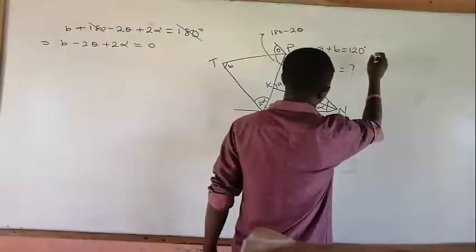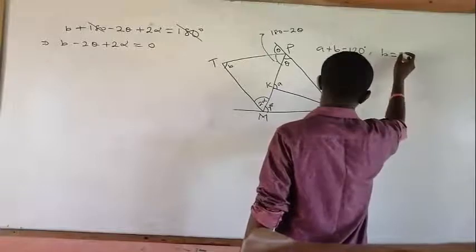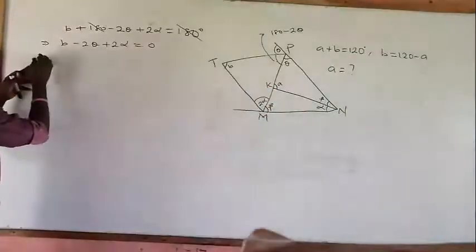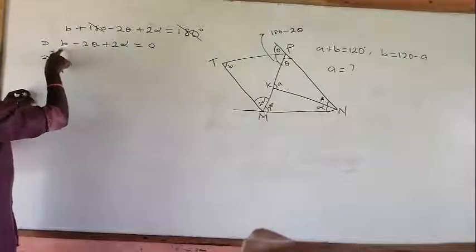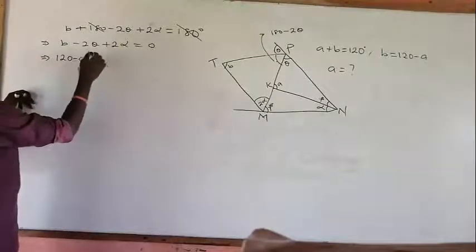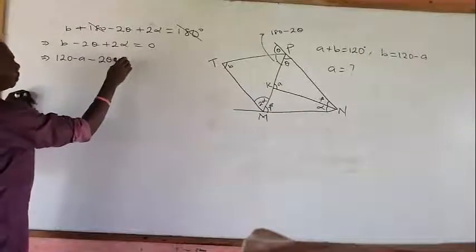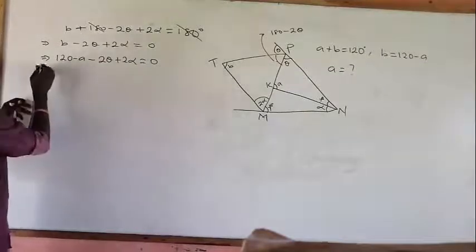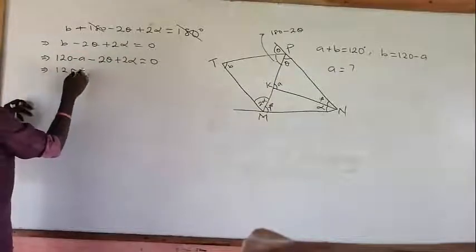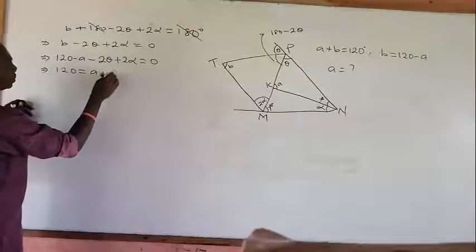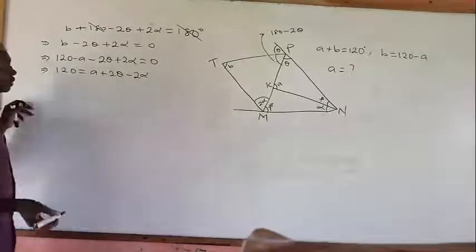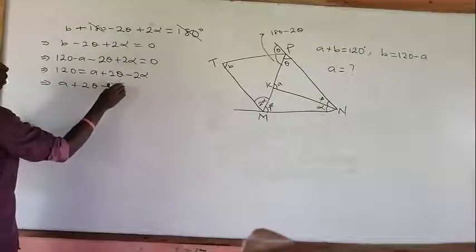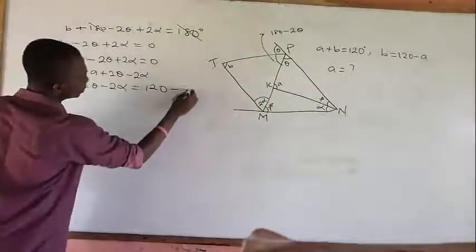From here we can say B equals 120 minus A. So in place of B, I can put 120 minus A. So we have: (120 minus A) minus 2 theta plus 2 alpha equals 0. Let me rearrange — we get A plus 2 theta minus 2 alpha equals 120 degrees. Let's name this Equation 1.